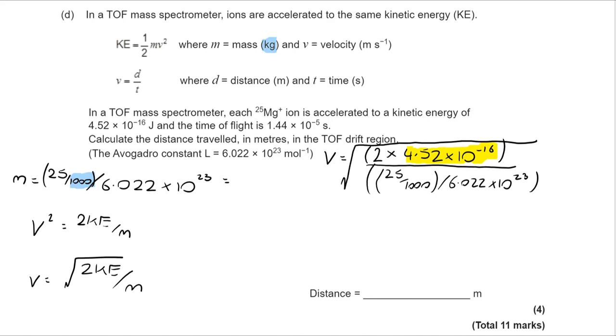But obviously that's the square root, so we don't forget that at this point. Now that takes me to a velocity of 1.48 by 10 to the minus 5 meters per second. I'm now going to use my distance velocity time equation. I'm going to multiply that by the time of flight, which is in seconds. That takes me to a distance of 2.13 meters.